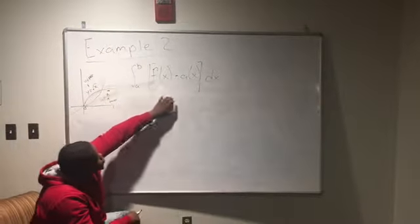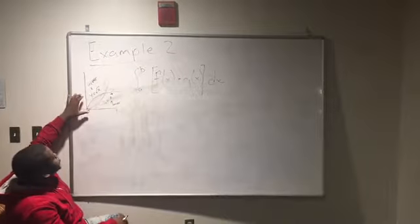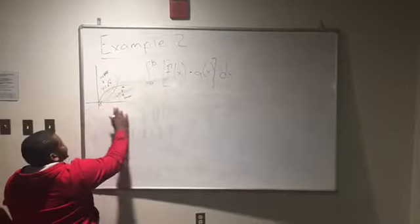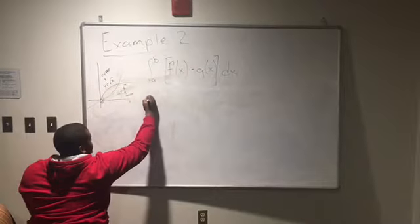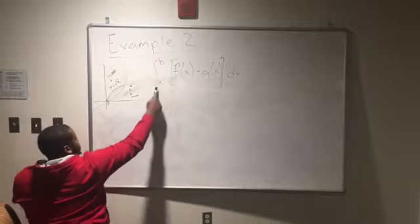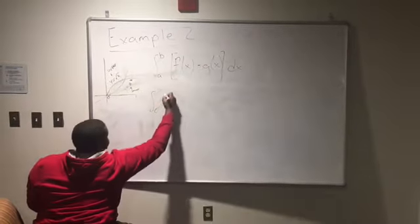Hey guys, Ennis here to bring you example 2. In example 2, we have the square root of x as our f of x, or upper function, and x cubed as our g of x, or lower function, and 0 to 1 as our interval.